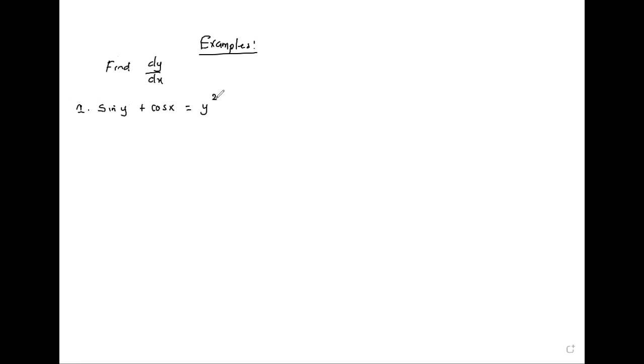You can see that to find dy/dx here you have to use implicit differentiation because you can't solve for y. So we differentiate it as it is. The derivative of sin(y) is cos(y), but because we've touched y we multiply by dy/dx. Derivative of cos(x) is negative sin(x).